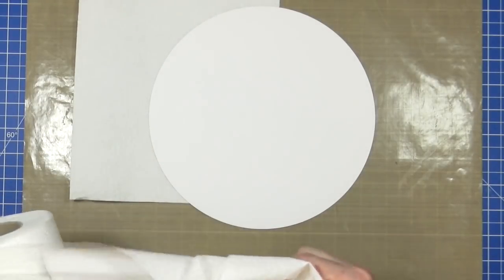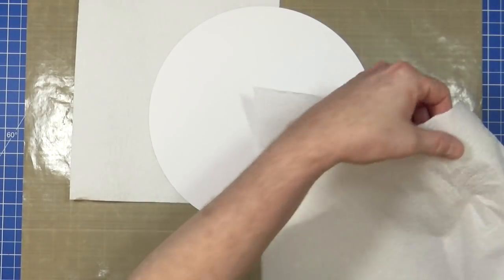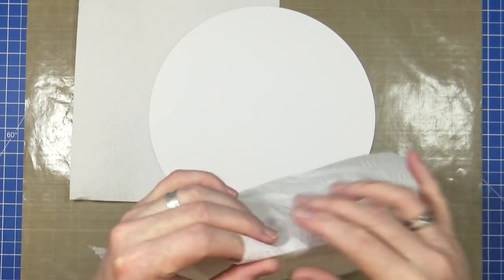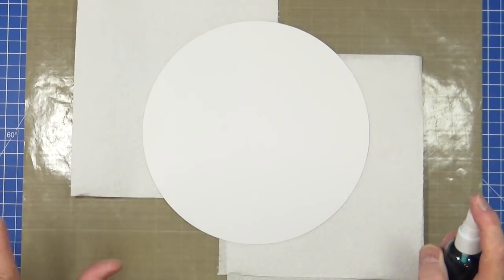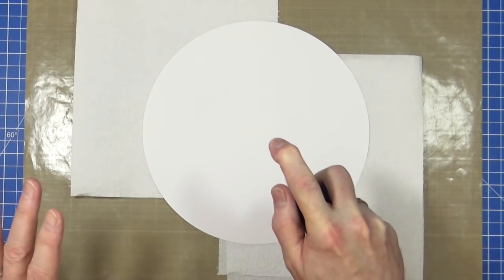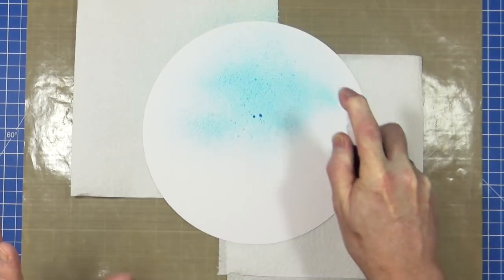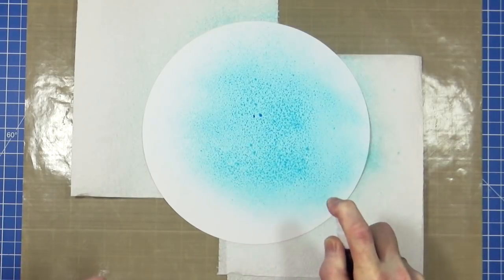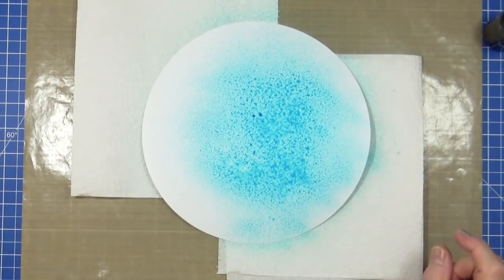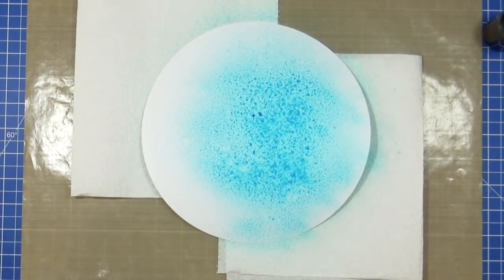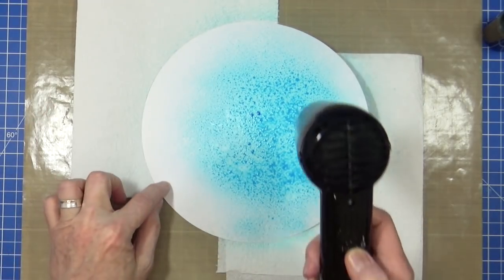And I'm not going to go really heavy. The trick today, I think, is going to be restraint. Because there is the possibility of really overworking this today. So I'm going to just do a couple of coats first of all. So there's my first layer. So let me get that dry, and then we can carry on.